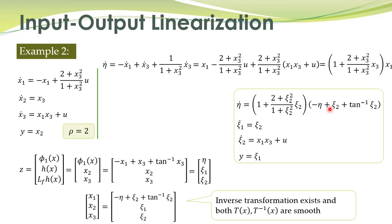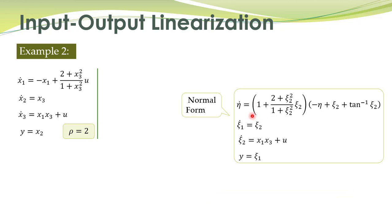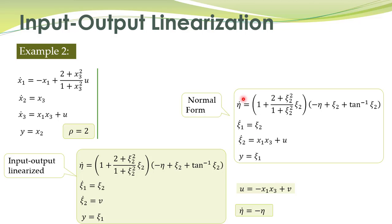We can study the stability of internal dynamics in the new state variables as well. The zero dynamics are obtained by substituting xi1 and xi2 equal to zero in the eta equation. This gives zero dynamics: eta-dot equals minus eta. It is obvious that these zero dynamics are asymptotically stable.